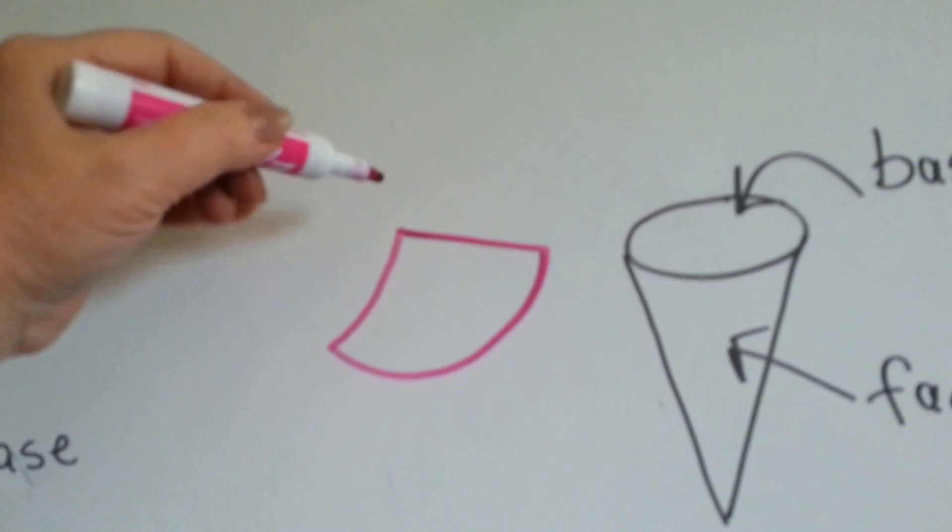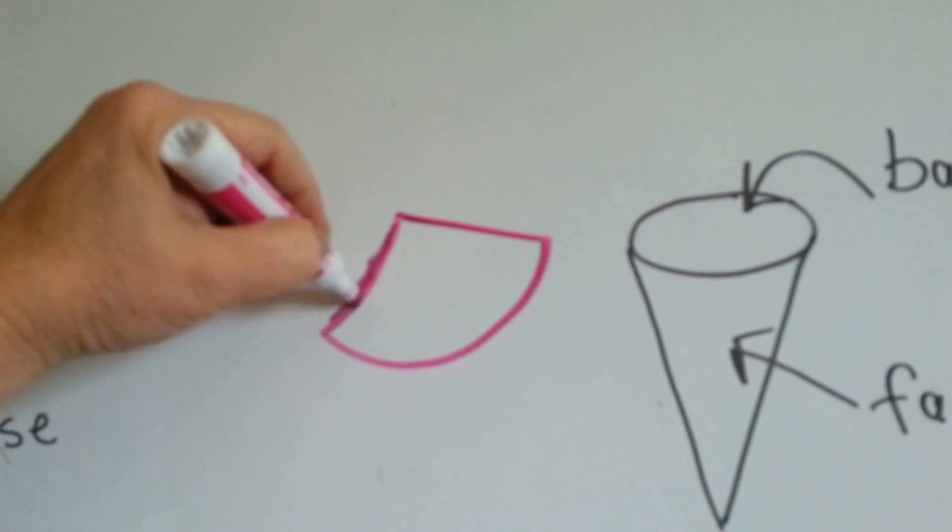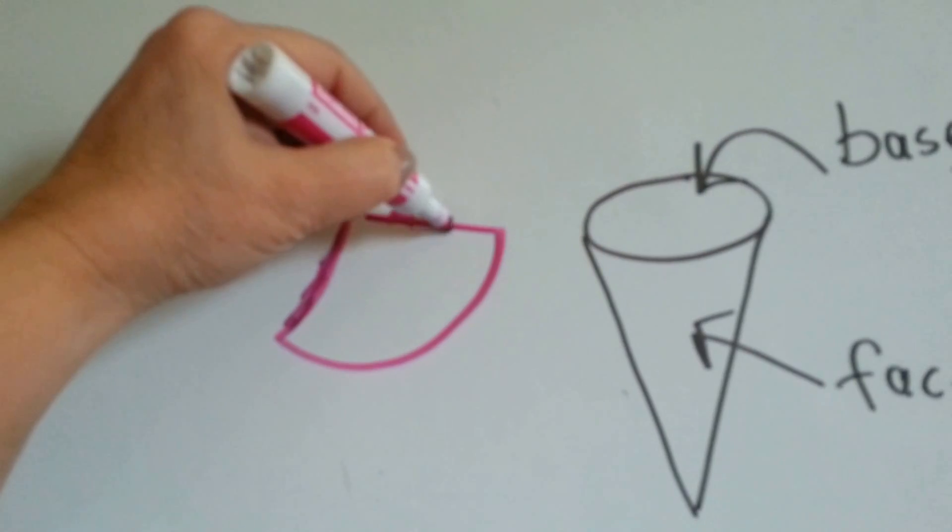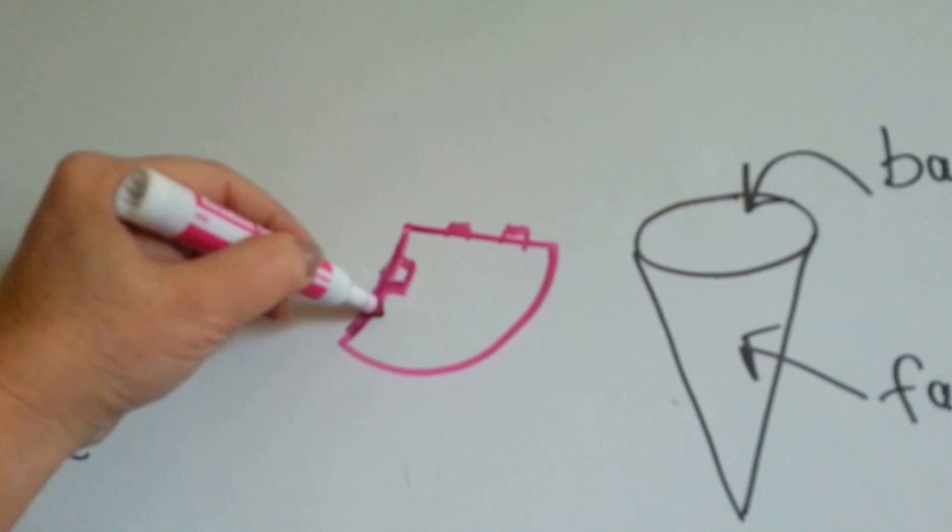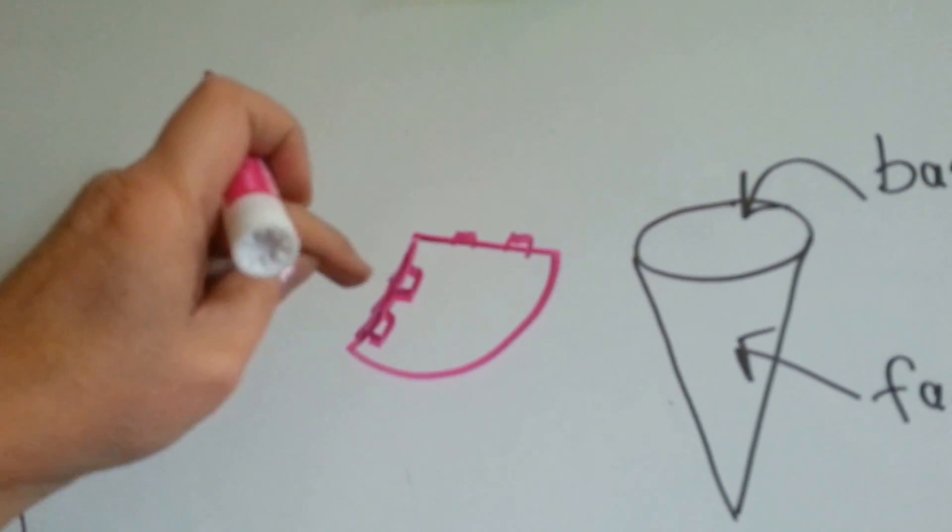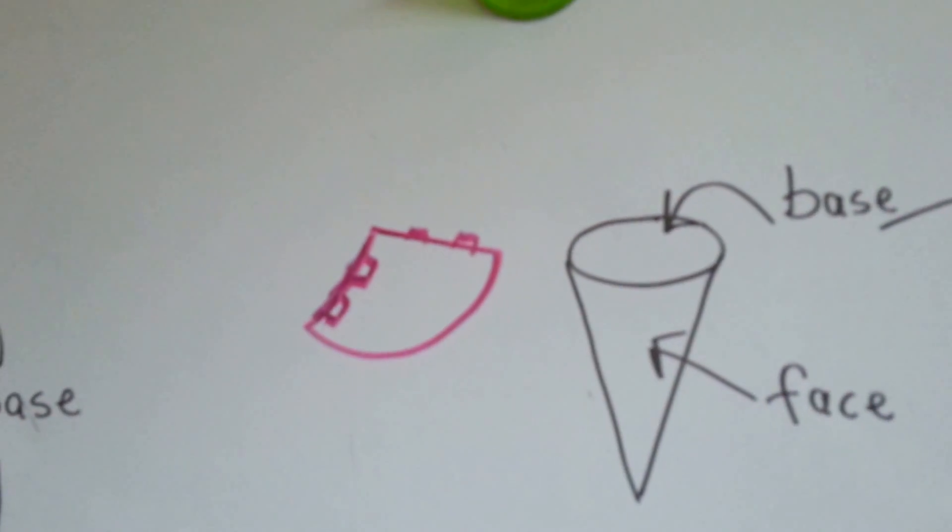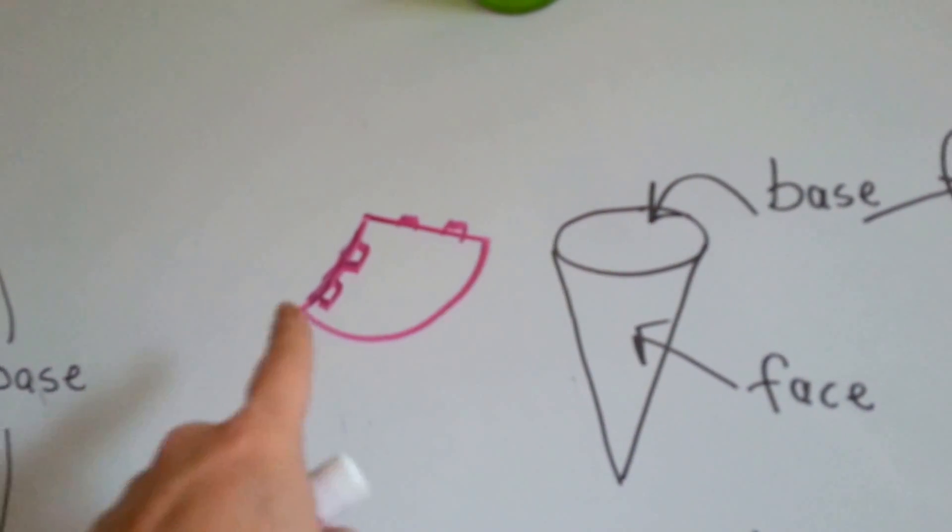And then if you taped this part to this part, let's say you had some tabs, and you connected this part and wrapped it around to this part, it would end up being in the shape of a cone, because that's what a cone looks like, opened up.